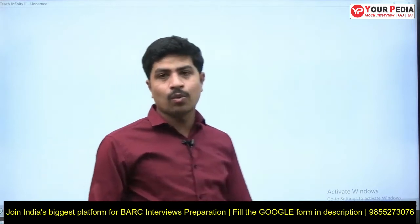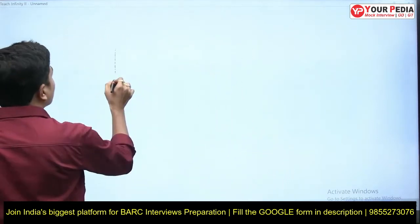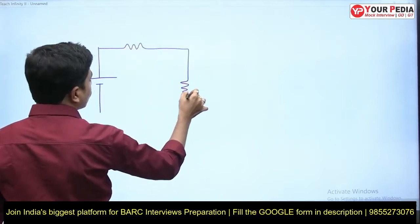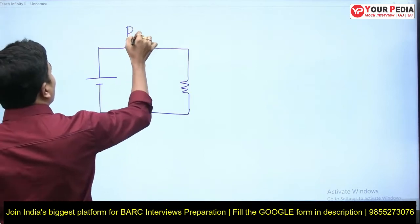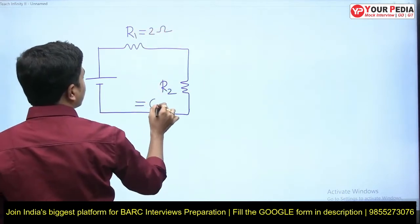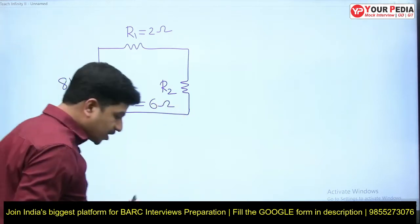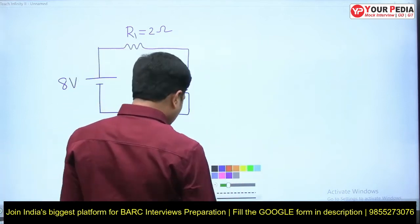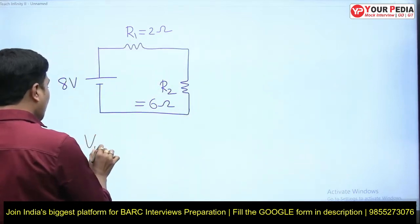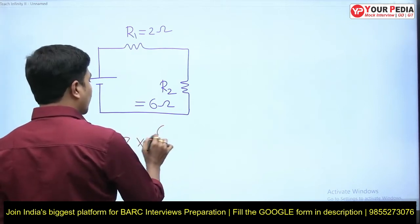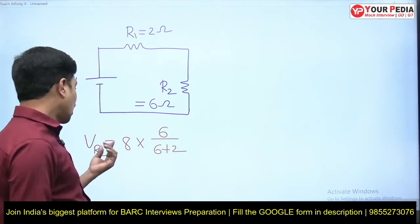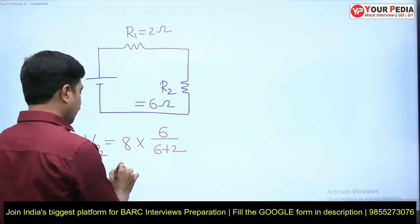I will explain loading effect by taking one simple example circuit: a DC voltage source and two resistances in series. I'll call this one R1 and this one R2, where R1 = 2 ohms and R2 = 6 ohms, with an input of 8 volts DC. The voltage across R2 is V_R2 = 8 × (6 / (6+2)) = 6 volts.